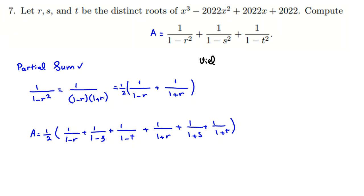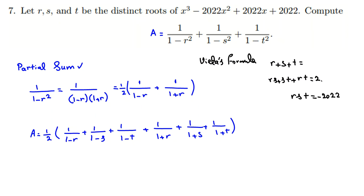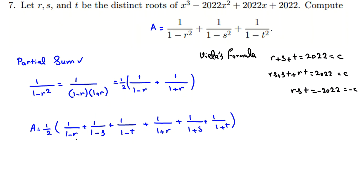Vieta's formulas: since the roots are r, s, t of the cubic x³ − …, we can find r+s+t, rs+st+rt, and rst. For our polynomial with coefficient 2022, these symmetric sums equal 2022 (with rst = −2022). We introduce a variable c = 2022. Now for the first group, we take the common denominator (1−r)(1−s)(1−t), and the numerator becomes (1−s)(1−t) + (1−r)(1−t) + (1−r)(1−s).